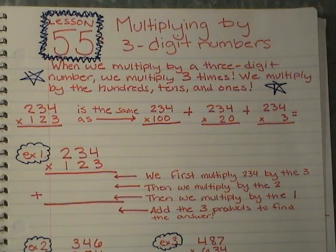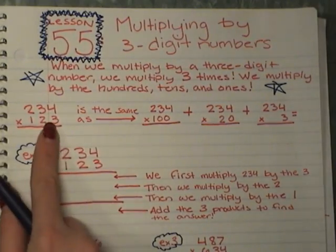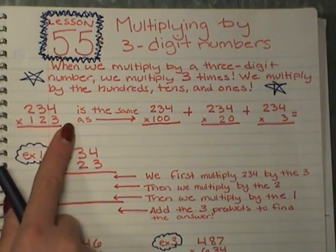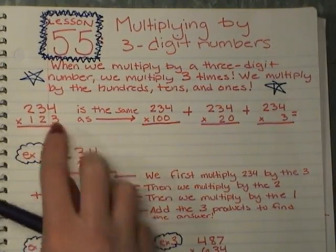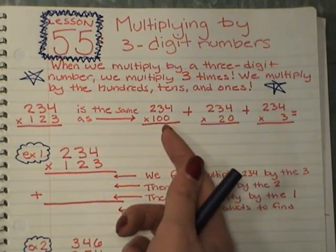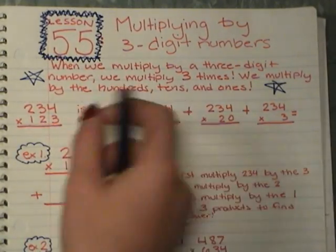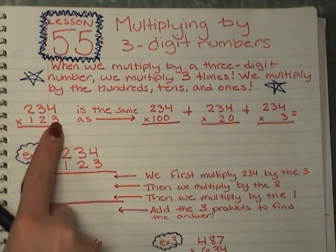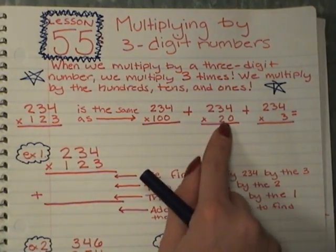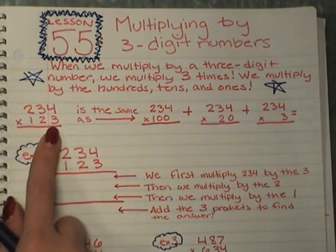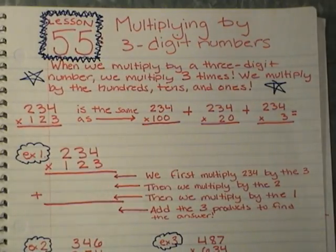Okay, so it's basically the same as taking, so we're multiplying 234 by 123. It's like taking out that 100, so we're multiplying this number by 100. Then we're multiplying it by 20 because we have two in our tens, so by 20. And then we're multiplying it lastly by our last three in our ones.